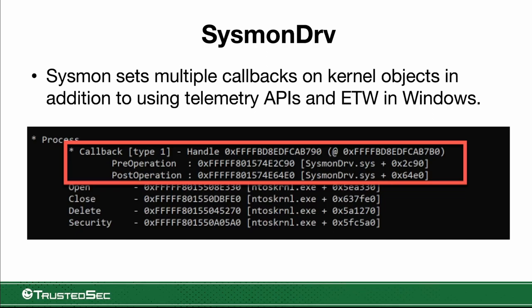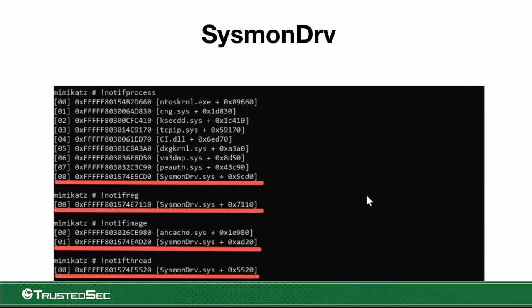As an example, I installed the Mimikatz driver and used different kernel commands to look at available callbacks. We can see that Sysmon registered itself for process callbacks, as well as for registry, image, and thread information — all available right there.